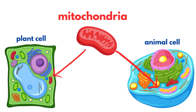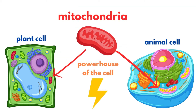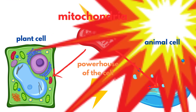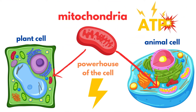Next, we have the mitochondria, often called the powerhouses of the cell. These organelles generate energy by converting nutrients into ATP, the energy currency of the cell. Both plant and animal cells rely on mitochondria to fuel their activities.